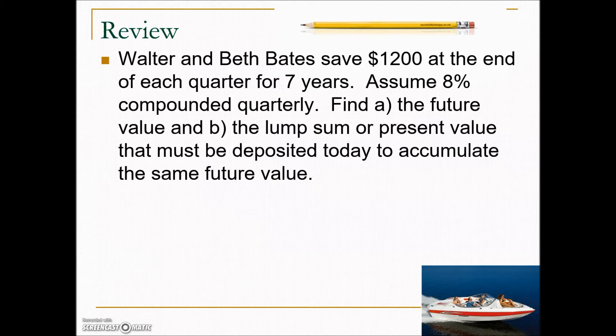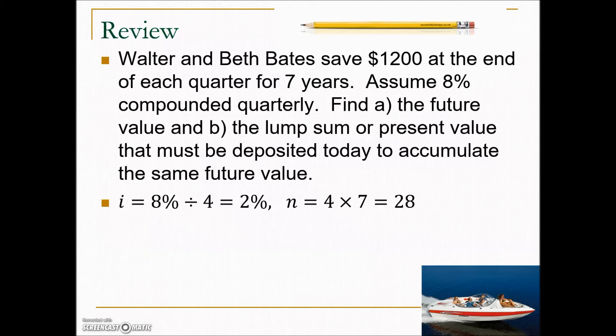They're asking us for the future value of the savings plan. We need to calculate the interest rate per compounding period. We take the 8% divided by 4 because of the quarterly compounding frequency, giving us 2%. How many compounding periods? Quarterly means 4 per year for 7 years, so there are 28 compounding periods, and we are determining the future value.